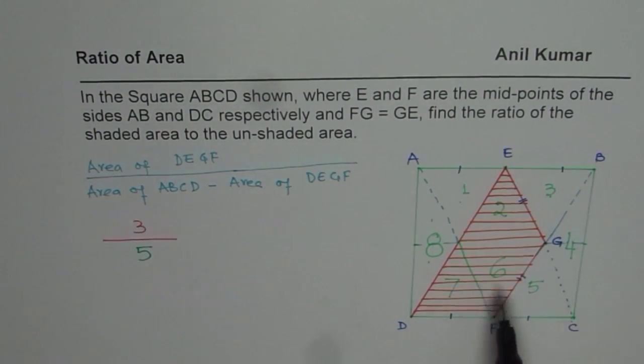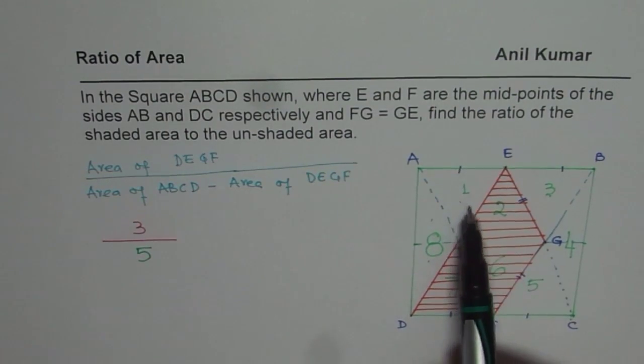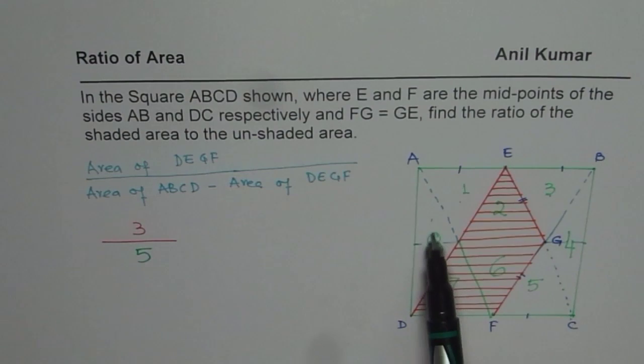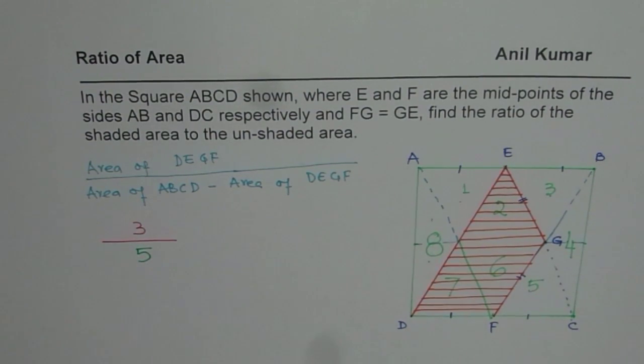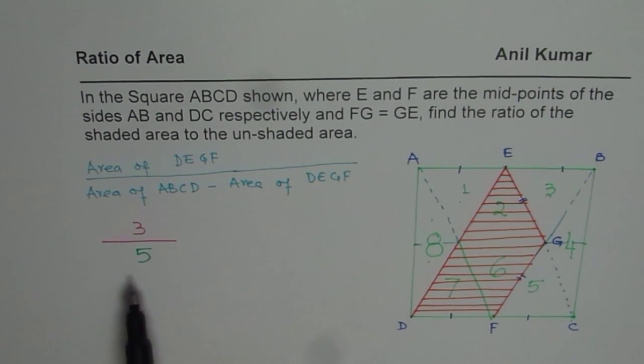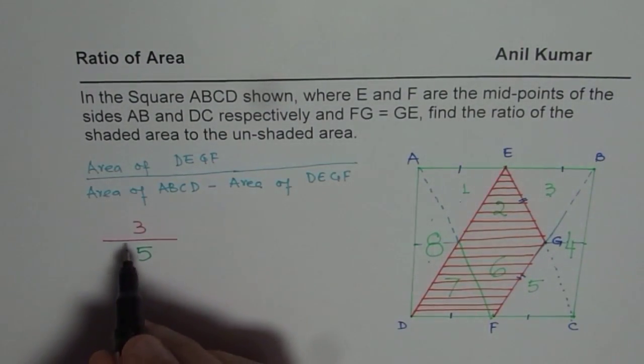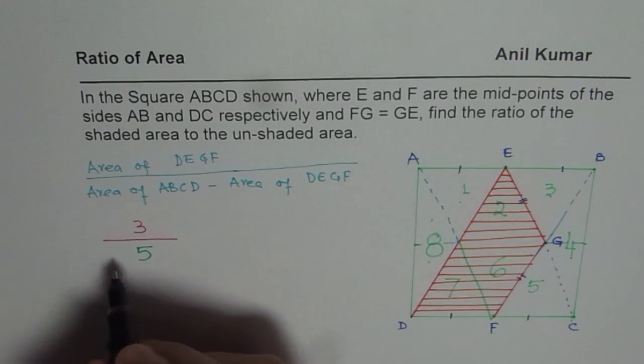Do we have 8 in all? Let us check. 1, 2, 3, 4, 5, 6 complete, 7, and 8. Yes, we do. So out of 8 triangles which we could form in this square, 3 are shaded and 5 are not. Find the ratio of shaded area to unshaded. So our answer is 3 over 5. That is how you can get the answer for this particular question.